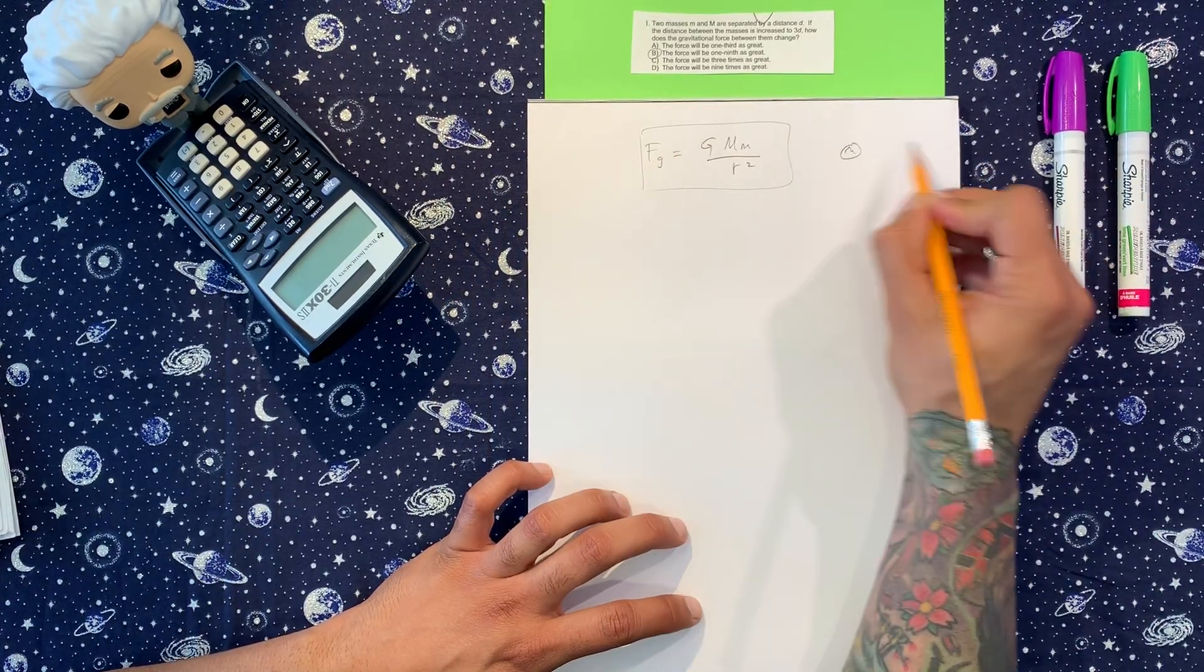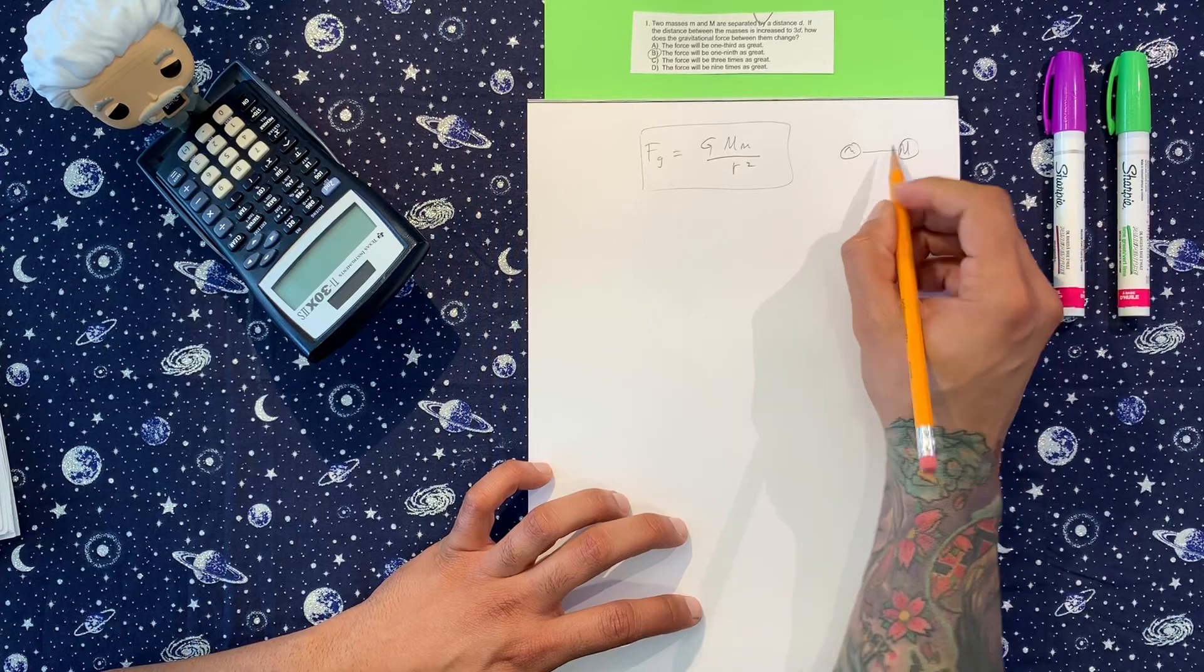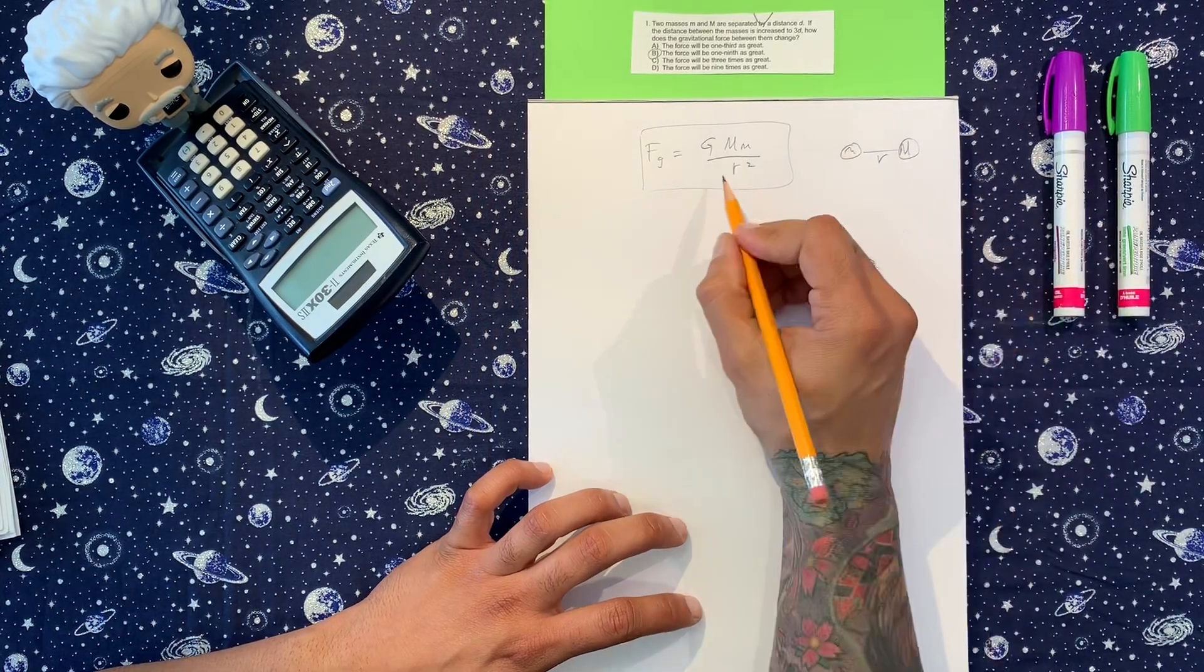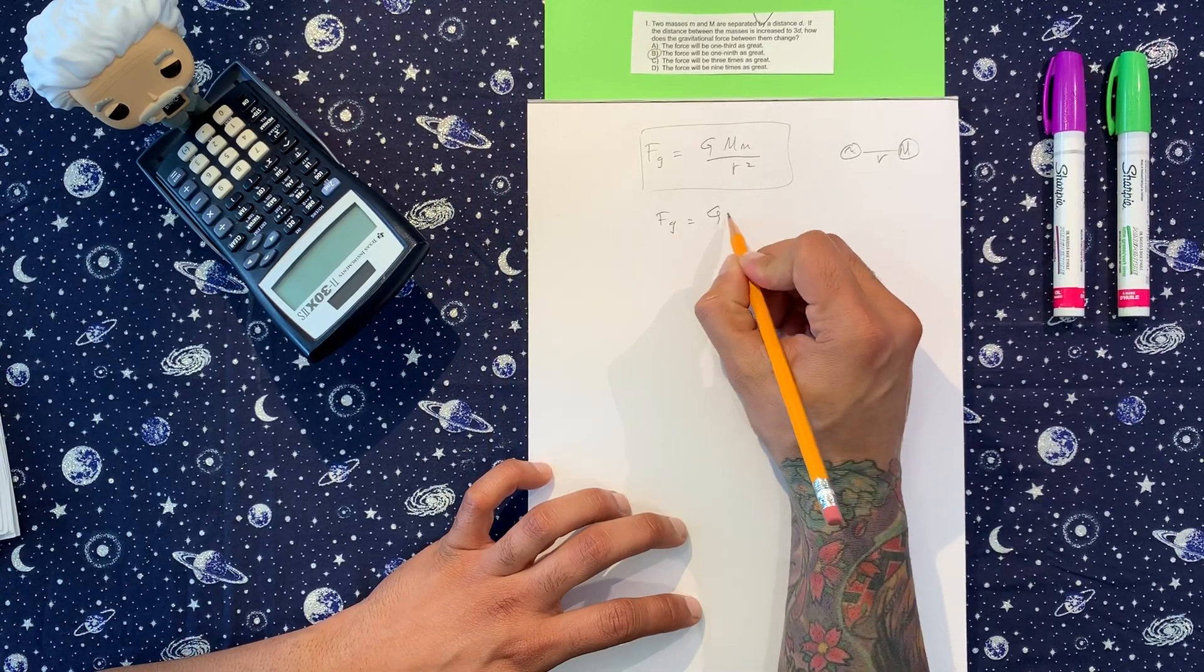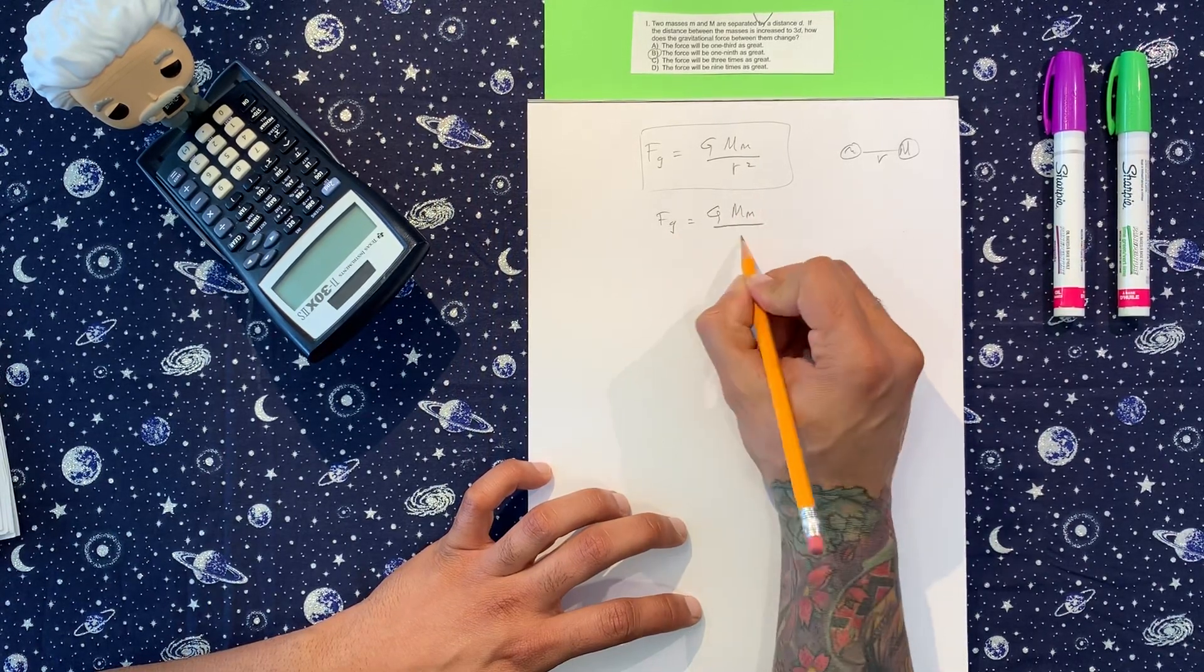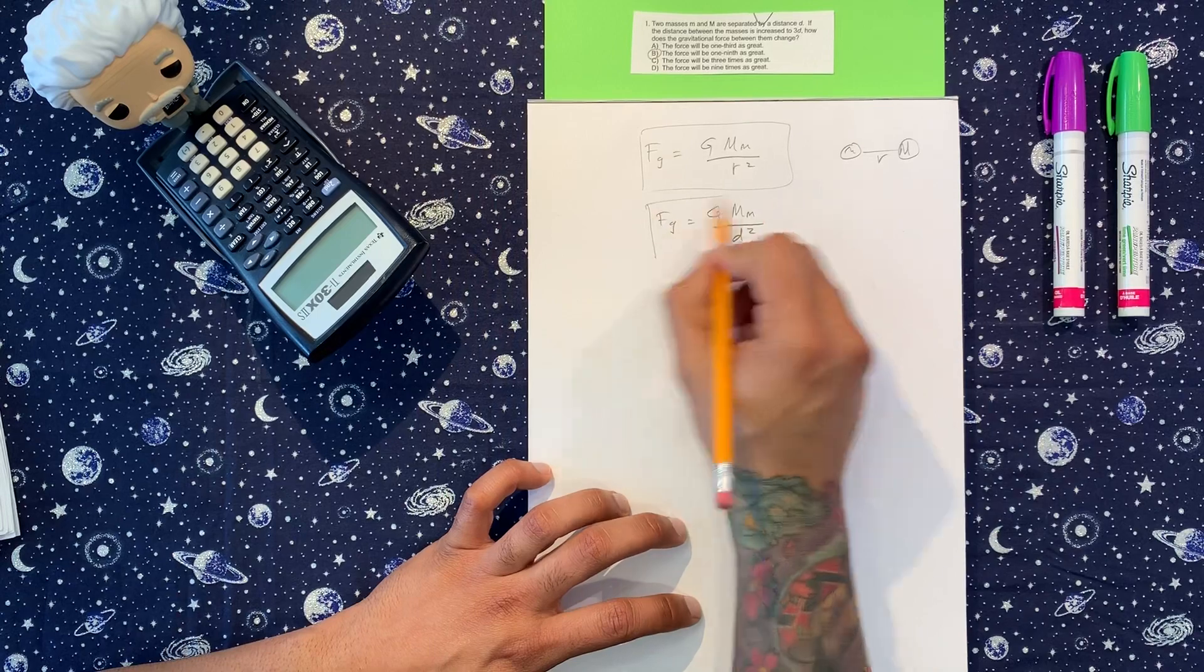So we just got little m, big M, and then separated by r. And we can change this to d. So it's the same thing if we write big M, little m, over d squared. Okay, so this is what we'll use.